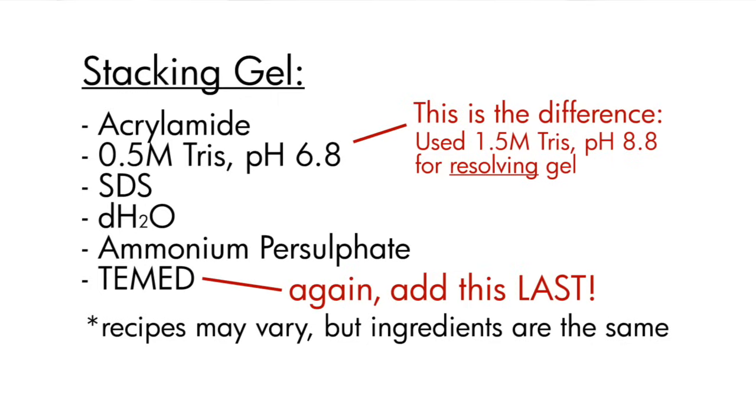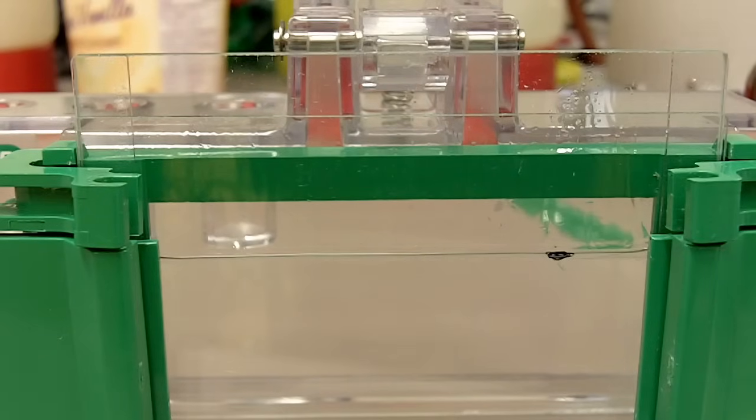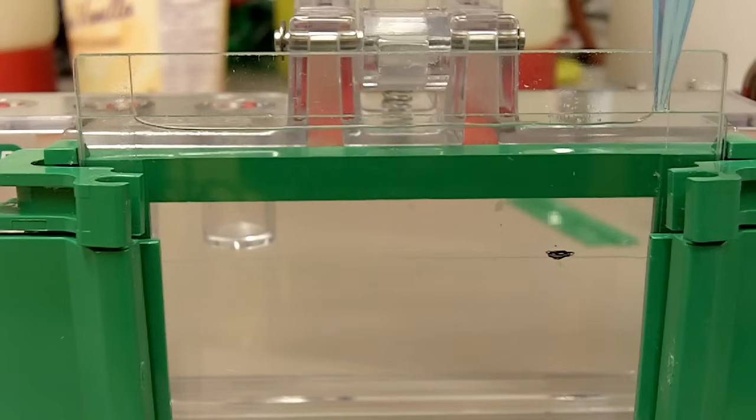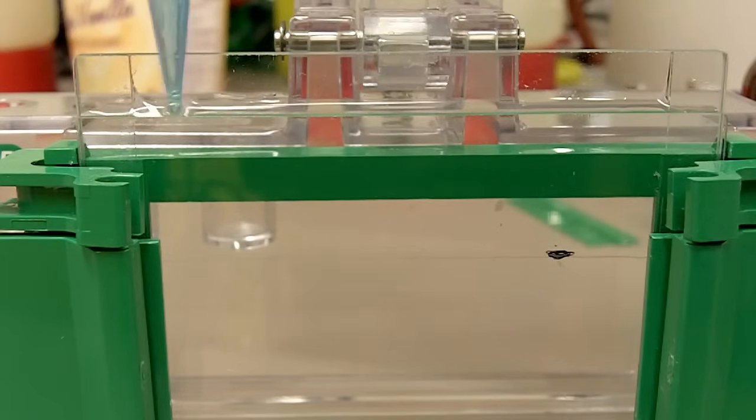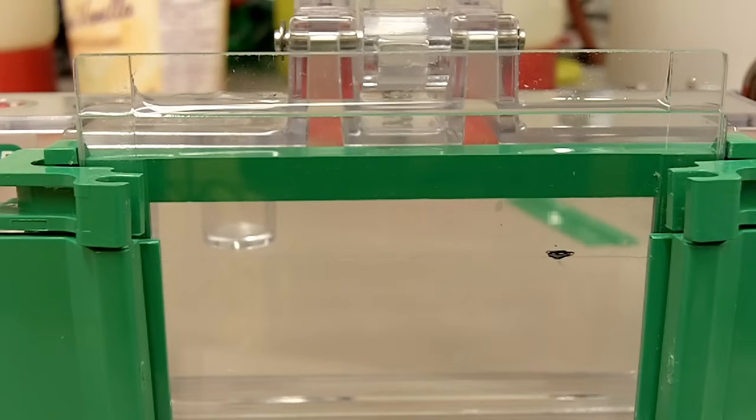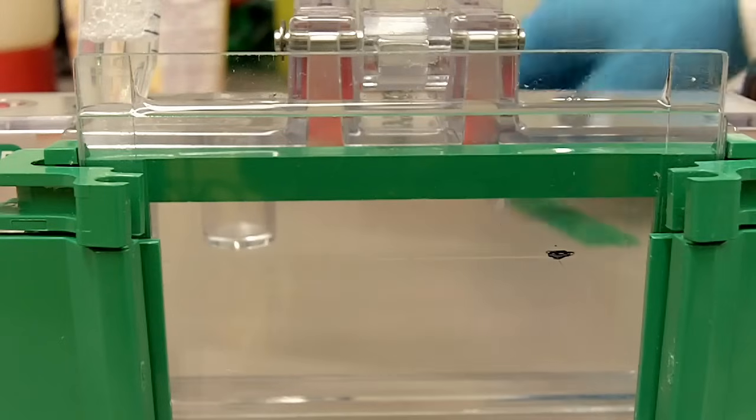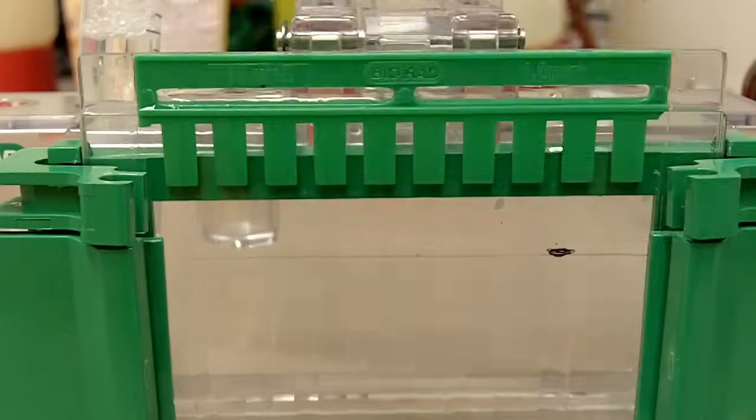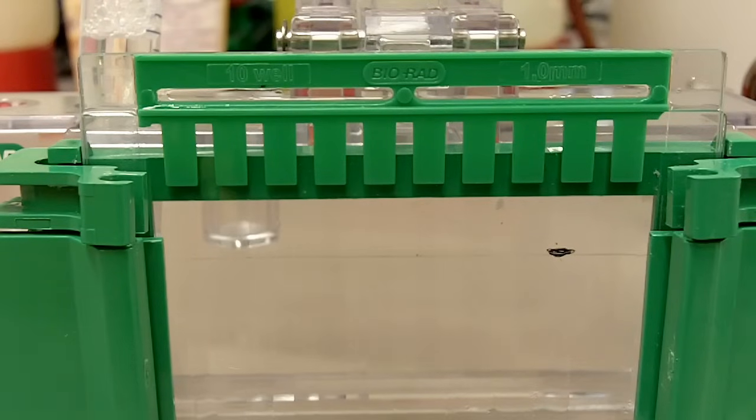So right now I'm going to add TEMED to the stacking gel. So we'll fill out the rest of the plate with stacking gel. We'll fill it all the way to the top like that. Right now you don't want to introduce any air bubbles because it's just going to get trapped. And then we'll put in the comb. And that's how you cast an SDS-PAGE gel.